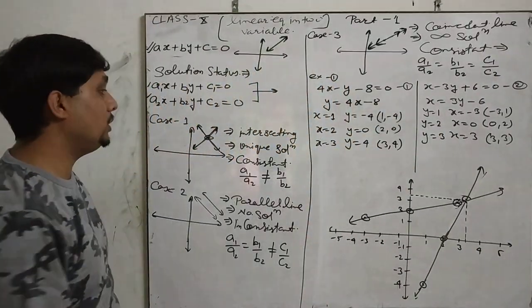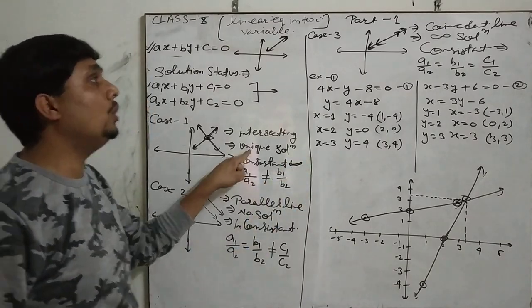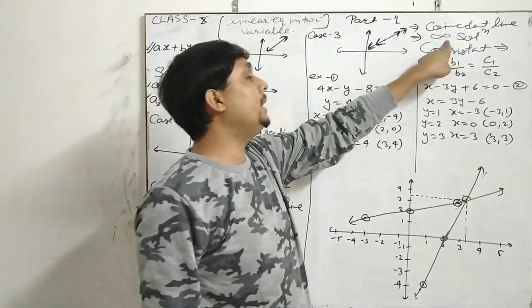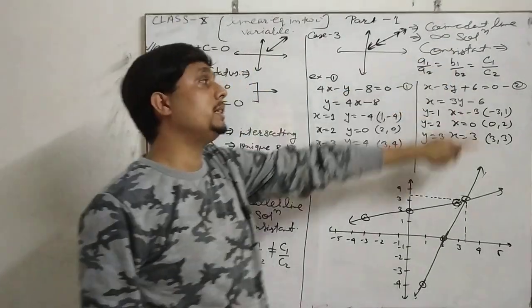What is consistent? We will say a system has a solution — whether it is a unique solution or infinite solutions — it is called consistent.